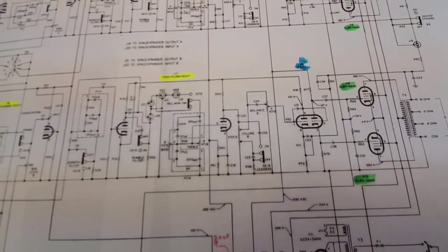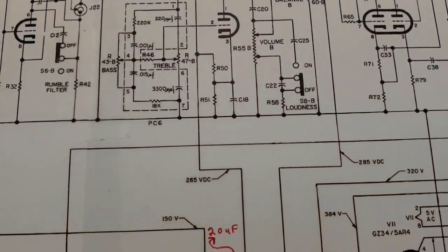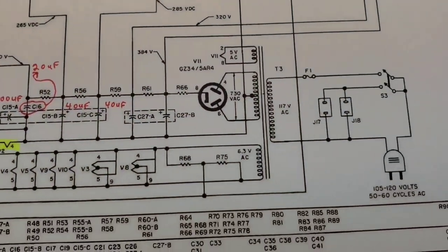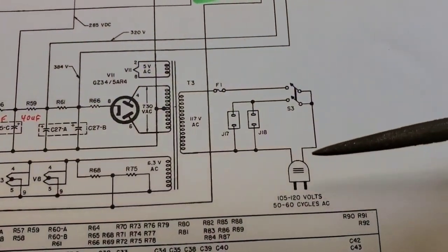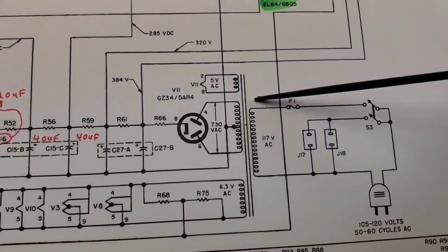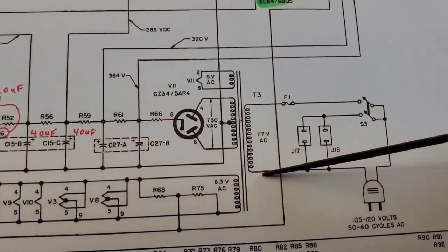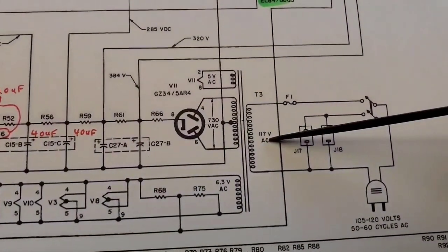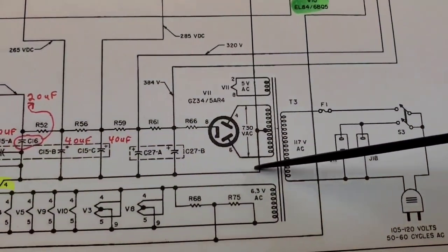I'm going to zoom in a little bit. Here is the outlet. So your power comes in. Here's your primary to the power transformer. It's 117 volts AC, and that breaks your voltage up into what you're going to need for the amp.